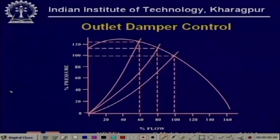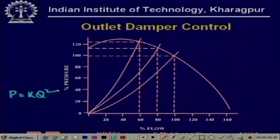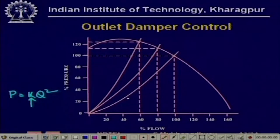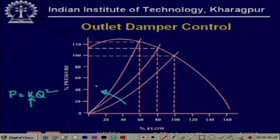You can consider the damper to be part of the load. As you are closing the damper, this load characteristic of p = k·q² has its k value gradually increasing, which means that as the damper is closing, more and more pressure is required to drive a given flow. That is natural. So as the damper is closing, this curve is shifting this way because k is increasing.